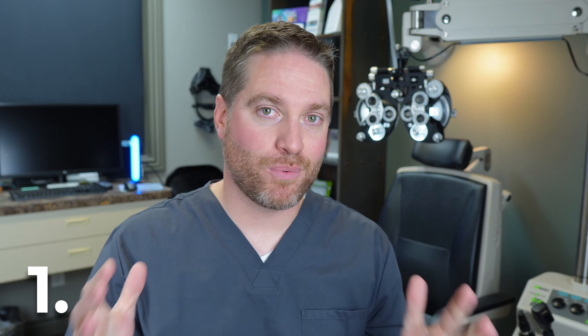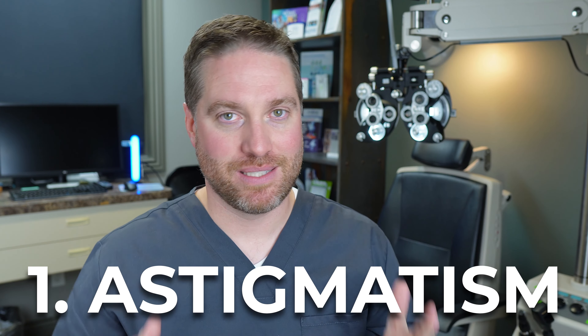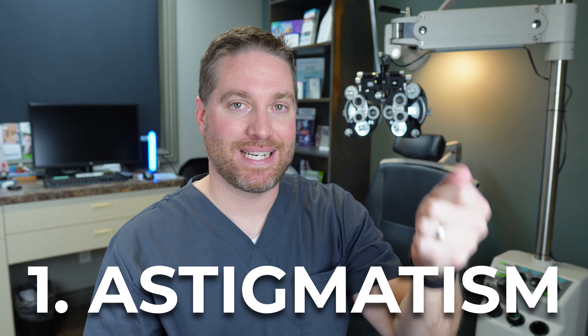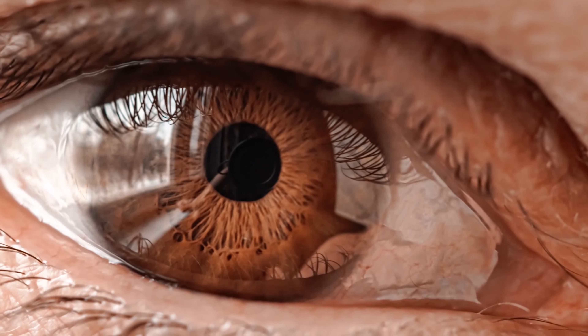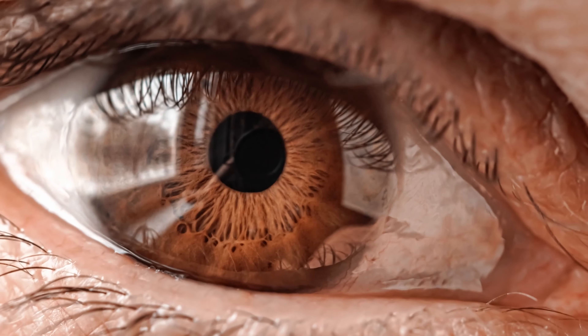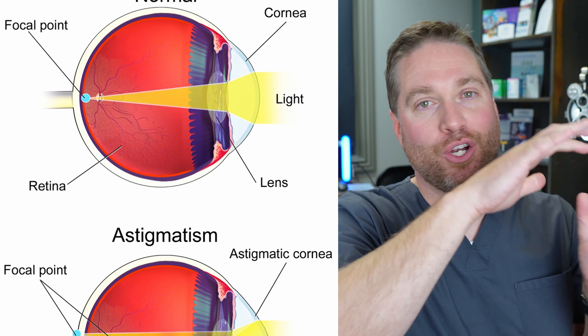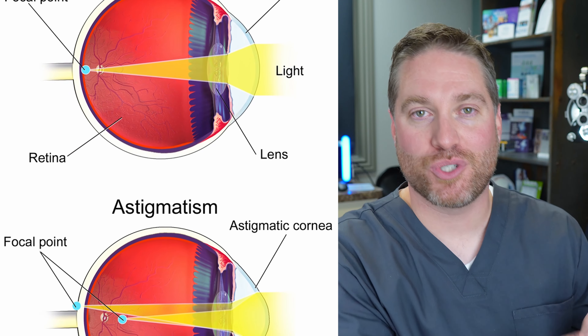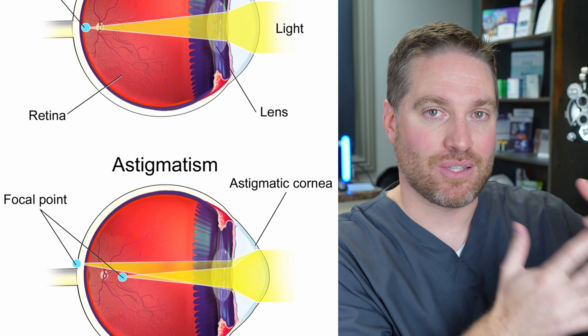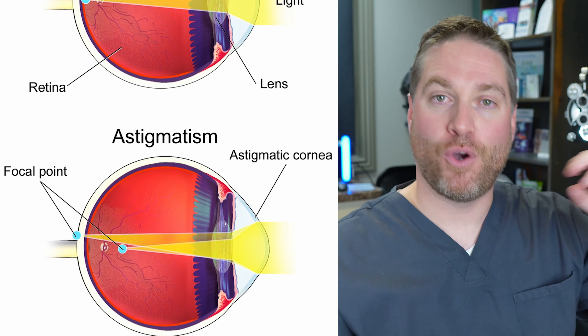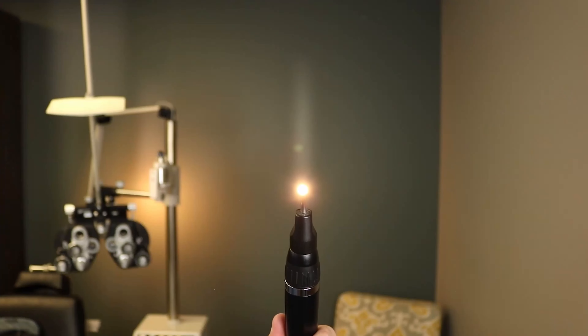Number one, and probably the most common reason, is astigmatism. Astigmatism is a very common refractive error, like being nearsighted or farsighted. It involves the curve of your eye — one portion of your eye is a little bit more curved, so it bends light differently. It may stretch lights out, and you might notice this at nighttime when you look at a street light — that light might have stars or appear stretched. This could be from astigmatism.